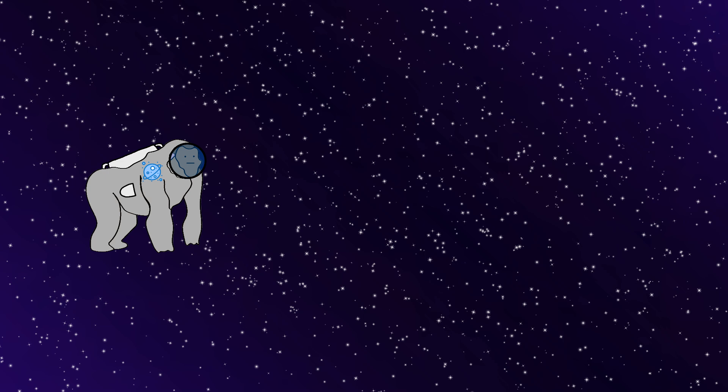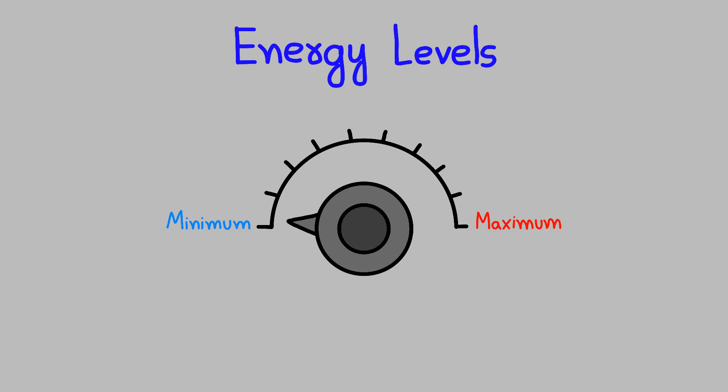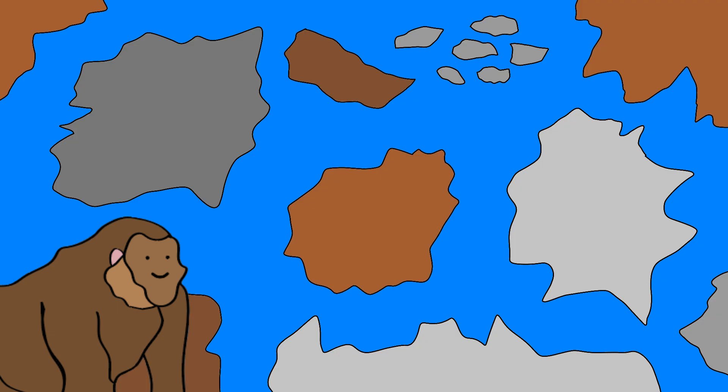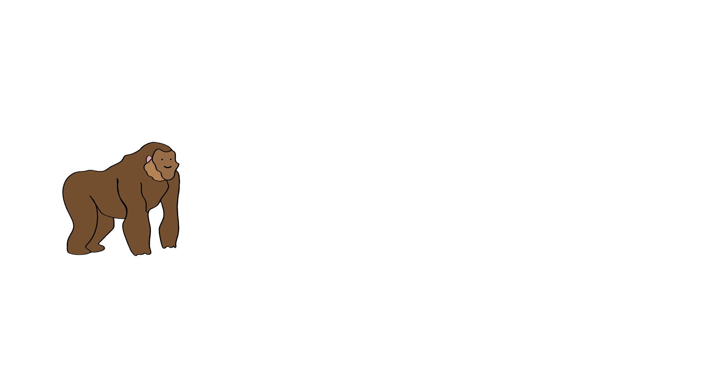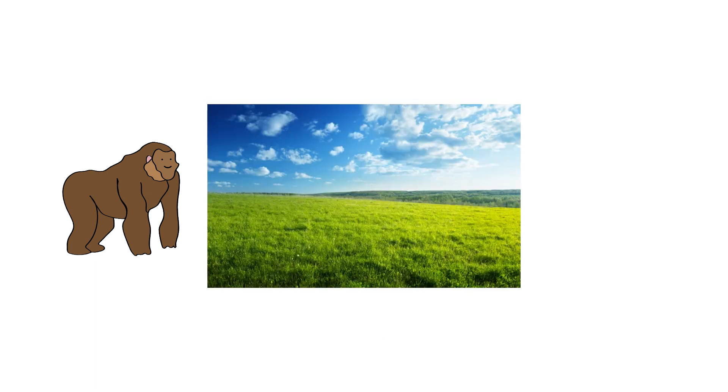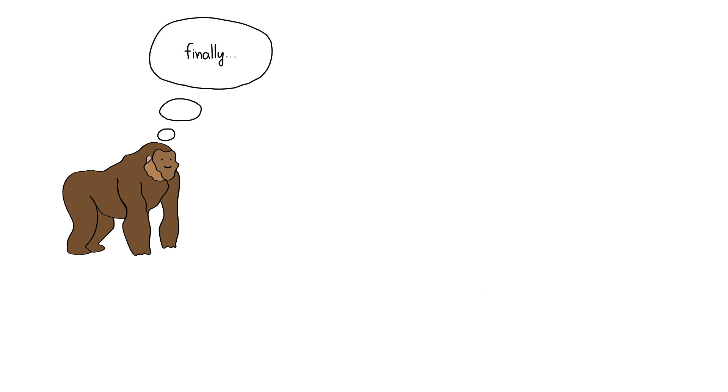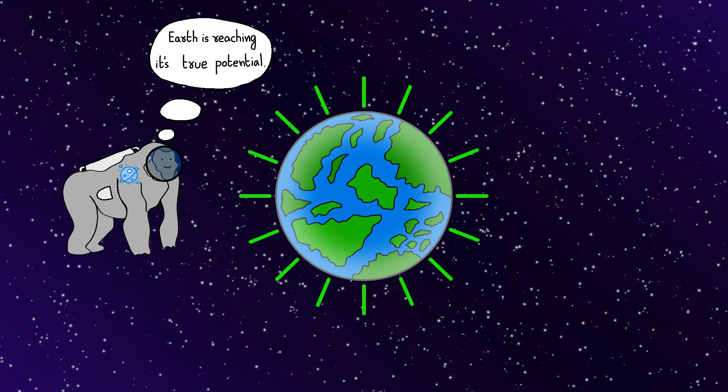First thing Monkey does is test the climate control. And Monkey cranks up the energy to maximum. And suddenly Monkey can terraform entire continents in days. So Monkey turns the Sahara into a tropical paradise, and Antarctica into a temperate garden. And Monkey's thinking, finally, Earth is reaching its true potential.